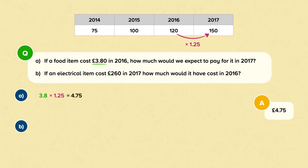Part B asks us: if an electrical item cost £260 in 2017, how much would it have cost in 2016? This part of the question is a little bit different as we are working backwards. We already have the multiplier, but we just need to perform the opposite operation and divide instead of multiply. So, 260 divided by 1.25 is 208. The item would have cost £208 in 2016.